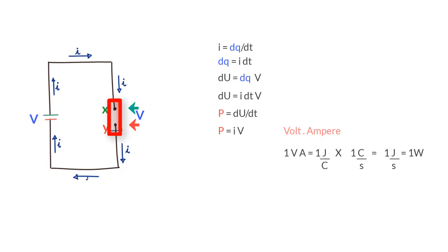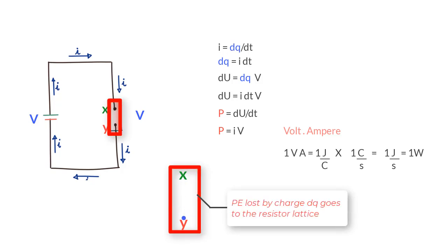A question that might come to your mind is: what really is happening at a microscopic level when power is getting transferred to the device? What happens is that as the electrons move at a constant drift velocity between the terminals, their kinetic energy remains the same but the potential energy reduces.